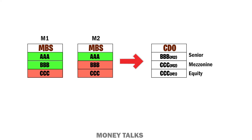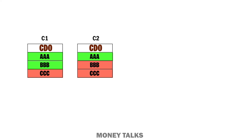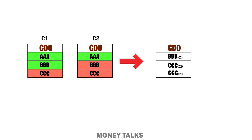As explained earlier, these CDOs were made up of BBB and CCC unsold tranches from MBS, so the rating of the overall CDO should not have been more than BBB. However, rating agencies gave AAA ratings to such CDOs. These CDOs were completely filled with tranches investors did not want, yet rating agencies still gave them higher ratings, leading investors to think these CDOs were safe investments. If the lower tranches of these CDOs were also unsold, banks would combine those unsold tranches from other CDOs into a new CDO — essentially a CDO of a CDO.